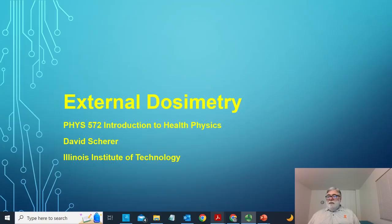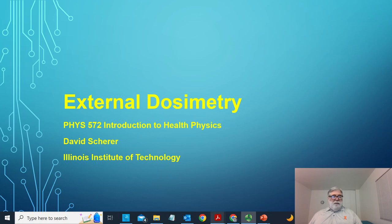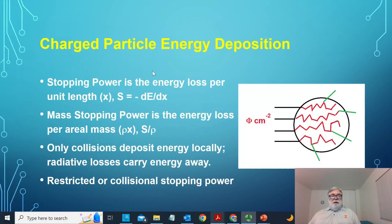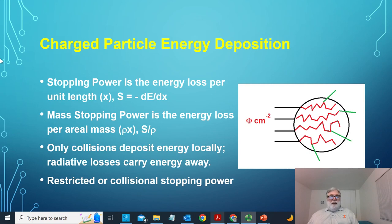Dosimetry is the measurement or calculation of radiation levels so that we can use those measurements or calculations to establish a basis for protecting people from the risks of radiation. We'll talk about the techniques and science underlying measurements of radiation. Let's first talk about radiation dose — absorbed dose from charged particles. The stopping power is the energy loss per unit length, dE/dx. The mass stopping power is the energy loss per aerial mass, S over rho, divided by the physical mass of the material.